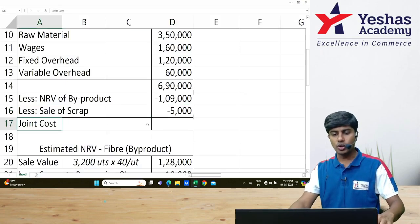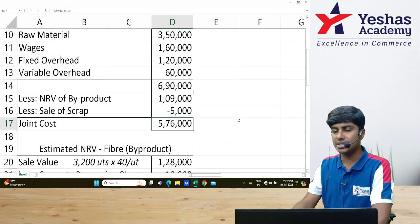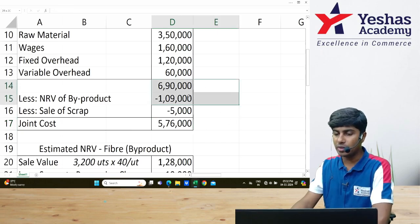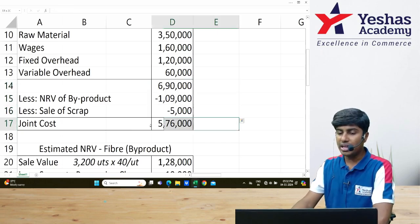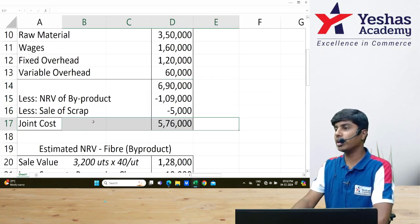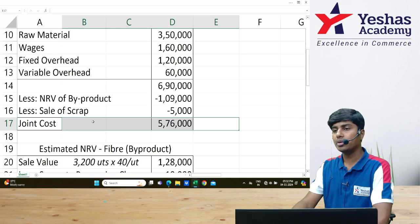After I deduct that, I will get joint cost of ₹5,76,000. ₹6,90,000 minus ₹1,09,000 minus ₹5,000. This ₹5,76,000 has to be allocated between polyester and nylon.